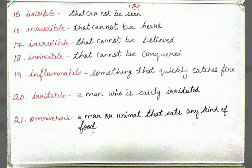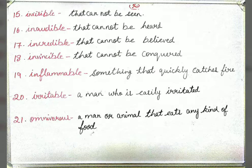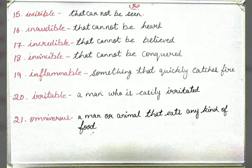The next is 'inflammable' — something that quickly catches fire. Jo cheezein jaldi fire catch karein unhe inflammable kehte hain. Next is 'irritable' — a man who is easily irritated. Jo bahut jaldi irritate ho jaye use irritable kehte hain. For example, 'Sham ek irritable person hai' instead of saying he gets irritated very quickly.